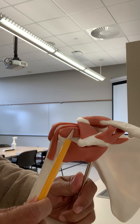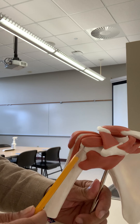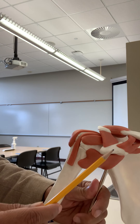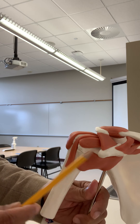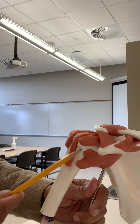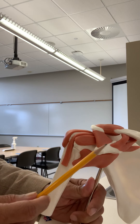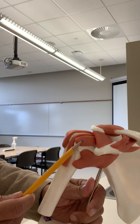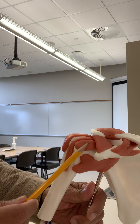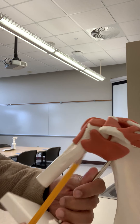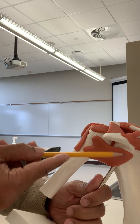This ligament is called the coracohumeral ligament. It comes from the coracoid process and attaches to the upper end of the humerus — so coracohumeral ligament.